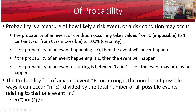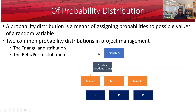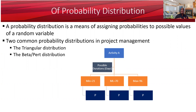What about probability distribution? A probability distribution is a function that associates a probability with the possible outcomes of a random variable. Another way to say it: it's a way of associating probabilities to possible outcomes of a random variable. In a project schedule, for example, you can consider activities as random variables when performing a simulation.